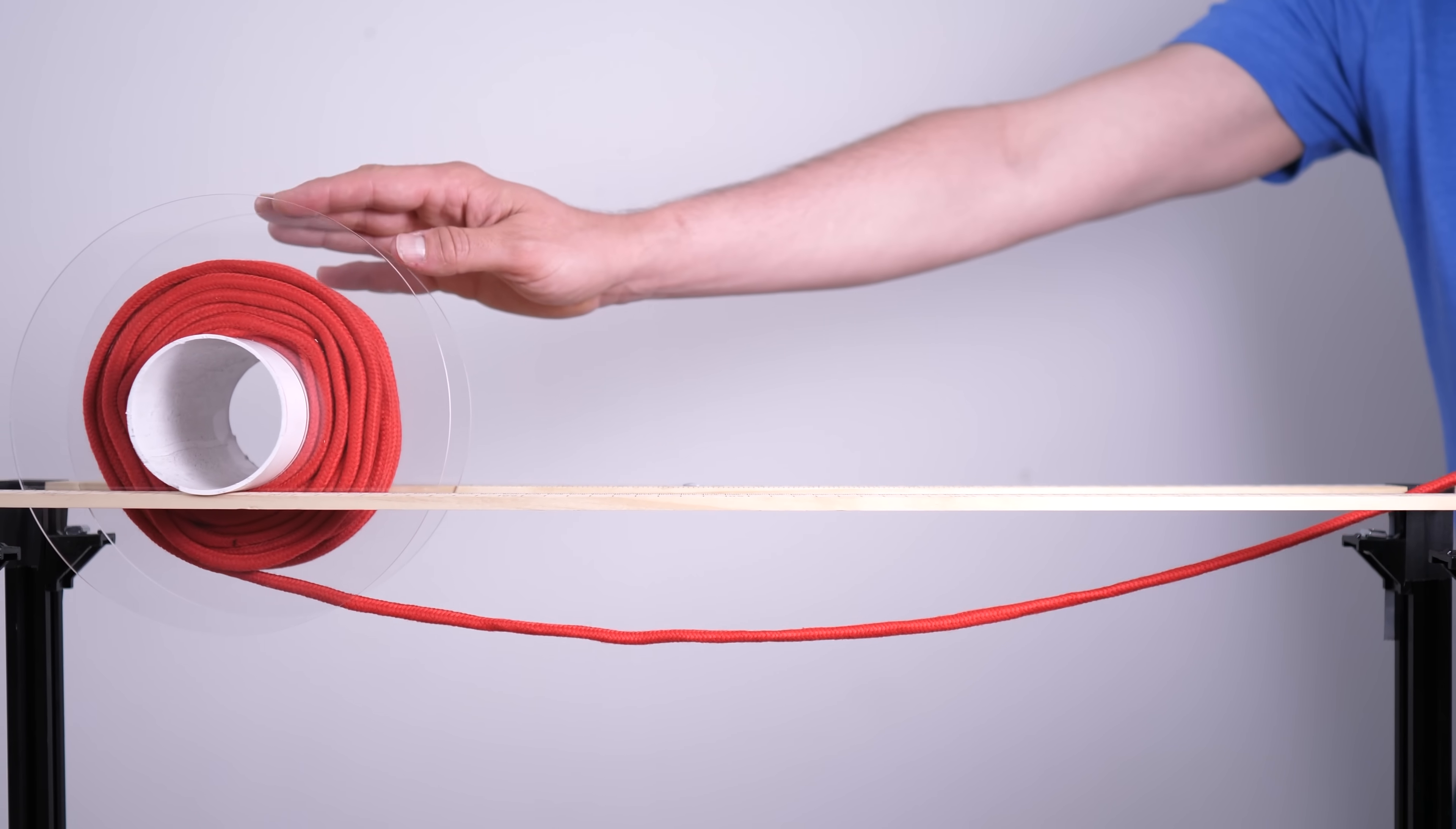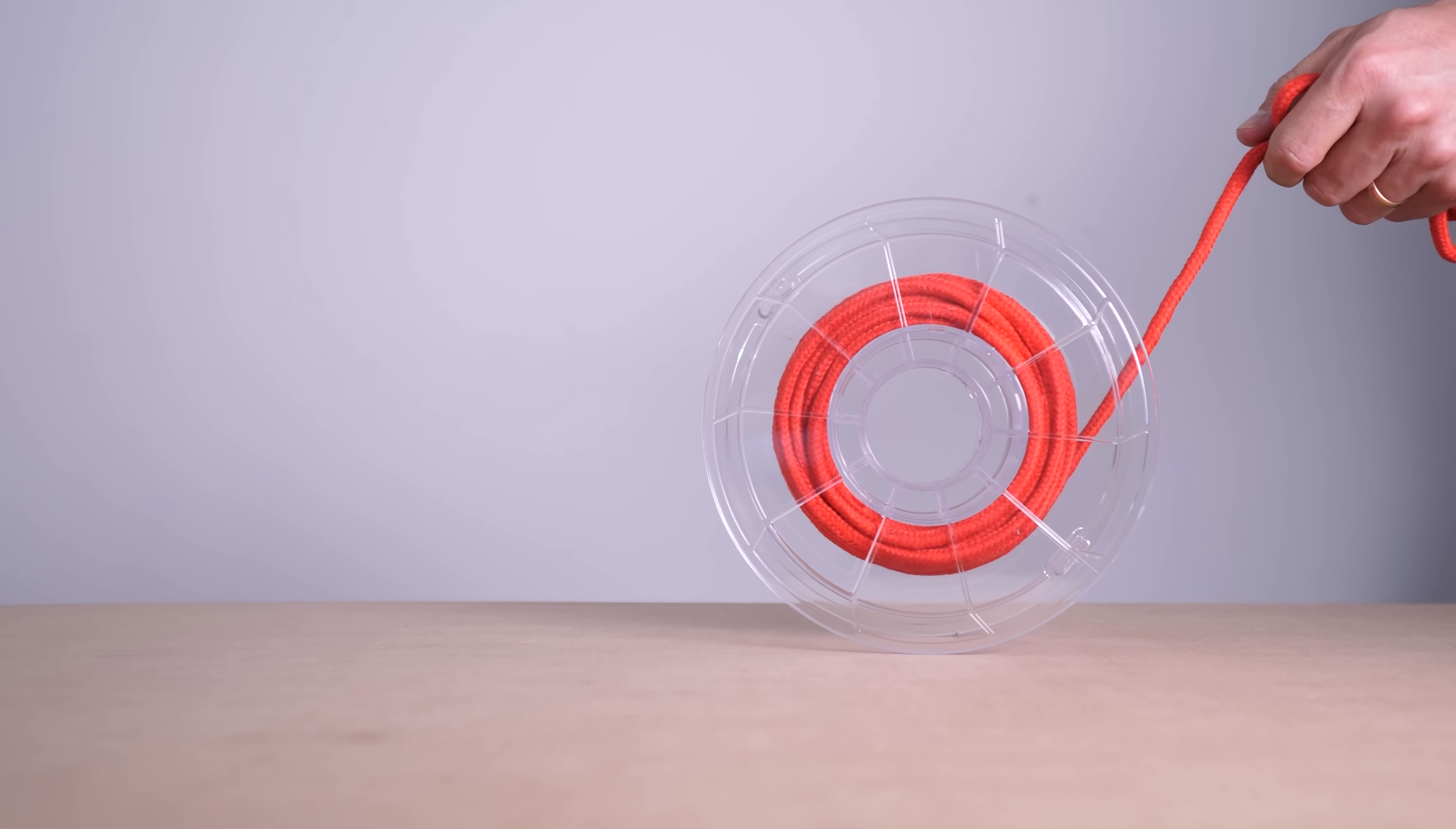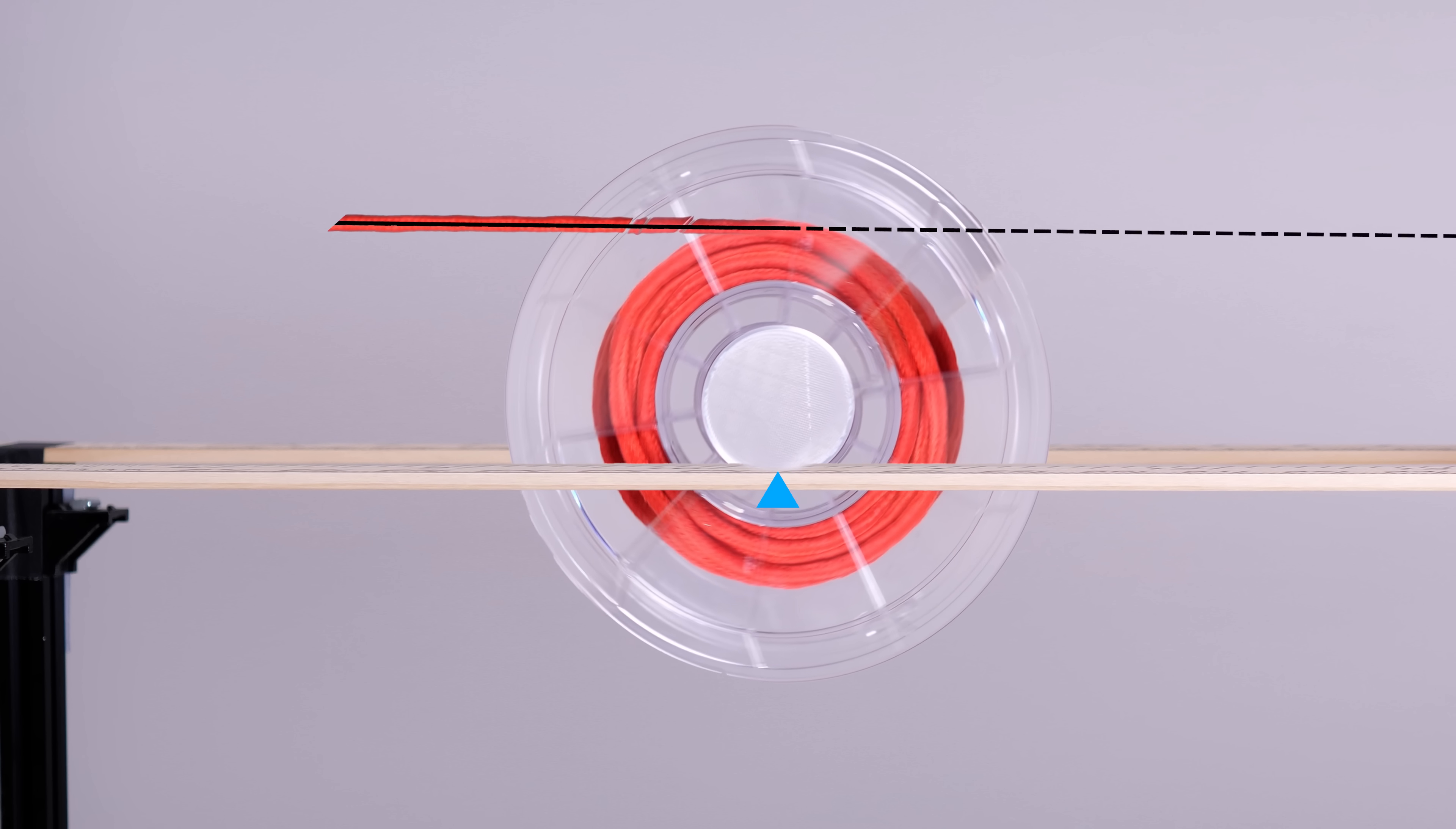It's interesting to note that in this setup, the spool will always roll to the right, regardless of the angle I choose. Whereas with this setup, there's an angle at which it flips. And that makes sense because in this setup, the force vector never passes through the pivot point.